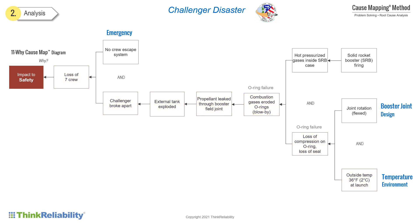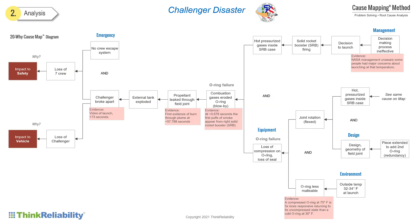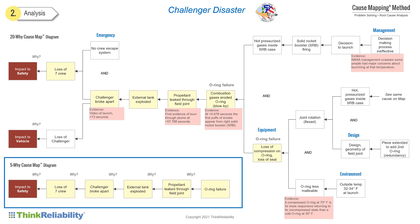This is a 20 why cause map that shows some of the supporting evidence. It's accurate, but it's still not complete — more detail can be added. Regardless of the complexity of your issue, you can start with a simple linear analysis and then expand as needed to thoroughly explain the details of what happened.